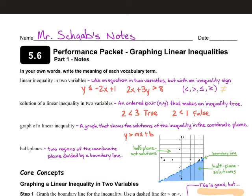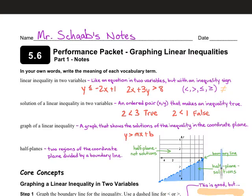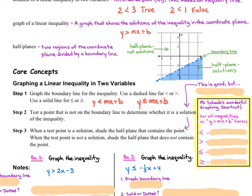When you draw a line in the coordinate plane, you're splitting it in half. The plane extends forever in both directions, so you're really cutting it in half by drawing that line — creating two half planes. There's the half that's above the line, and we call this line the boundary line. And then there's the half plane that's below the boundary line.